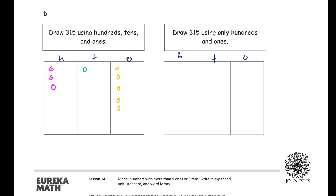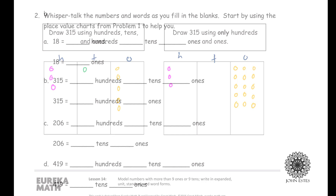Part B says draw 315 using only hundreds and ones. Thankfully it didn't say just ones. We have three hundreds and now we need 15 ones: one, two, three, four, five, six, seven, eight, nine, ten, eleven, twelve, thirteen, fourteen, fifteen.